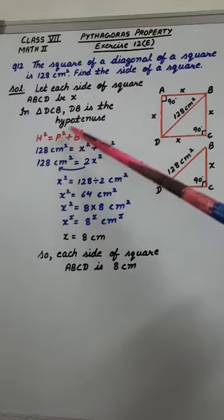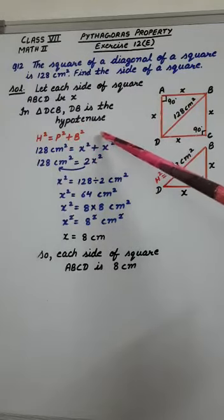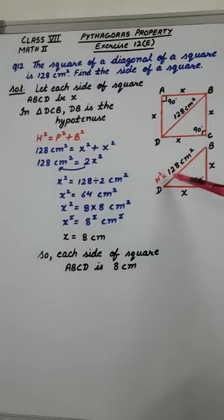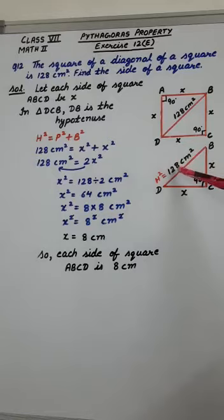And the remaining two sides, we are taking them as X. Now let's use Pythagoras property: H square equals P square plus B square. Now square of hypotenuse, it is already given 128 cm square. So this is already square is given, so we don't have to calculate square here.